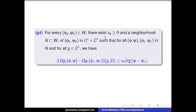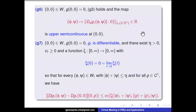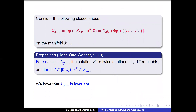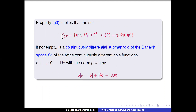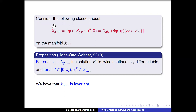We have local estimates concerning the derivative, some upper semi-continuity, and further estimates. We have these closed subsets of the manifold — looking at the manifold, we can prove using the linear extension of the derivative that the manifold itself is not invariant. That's why we need to define a closed subset. Hans-Otto Walther proved that if you start in that set — starting with a twice continuously differentiable solution — you remain in that set, so we have invariance.